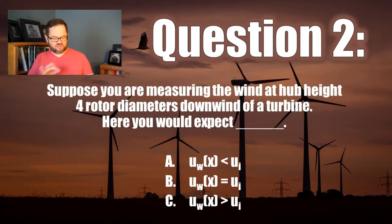Here you would expect blank, and then there's three different possibilities. Is the UW there less than UI? Is it UW there equal to UI? Or is UW there greater than UI? Make a choice in those three options and get a little feedback before you move on to question 3.